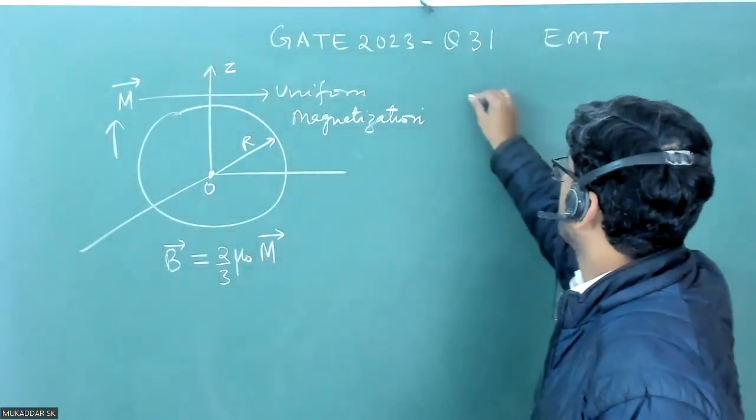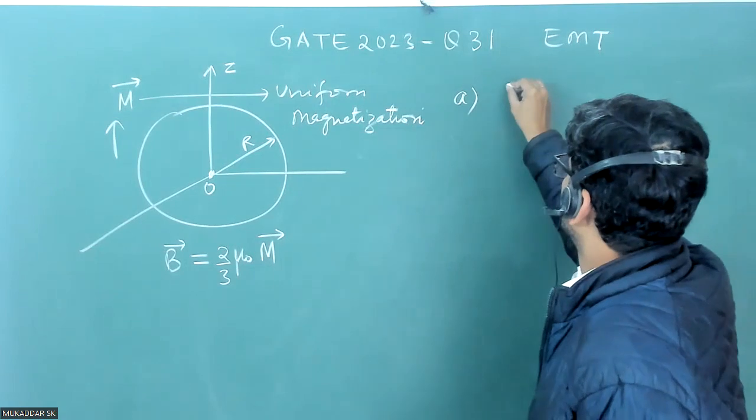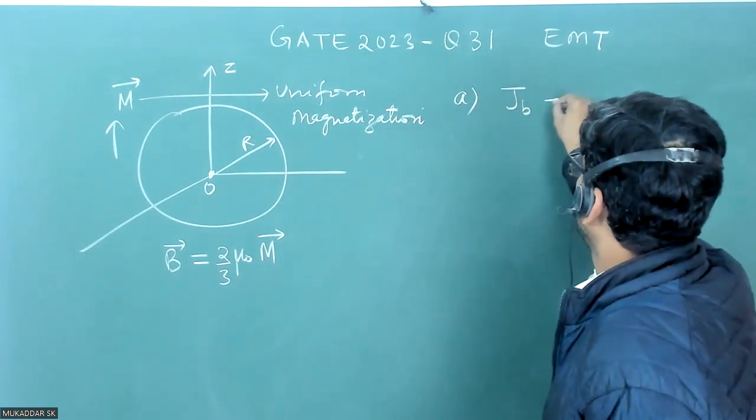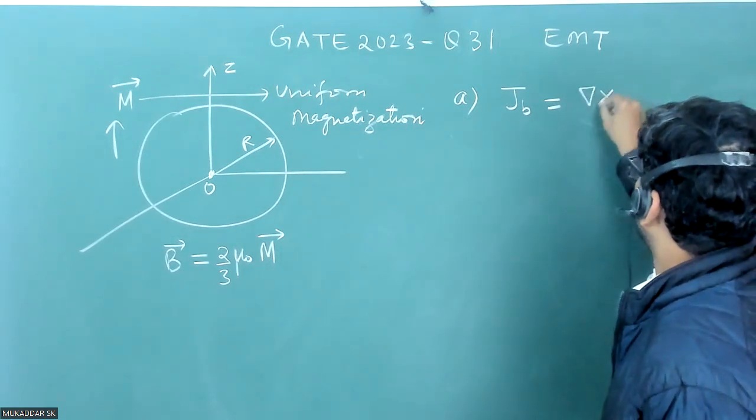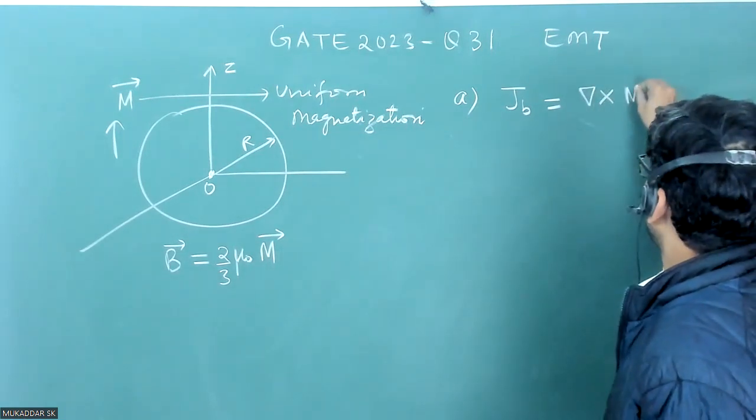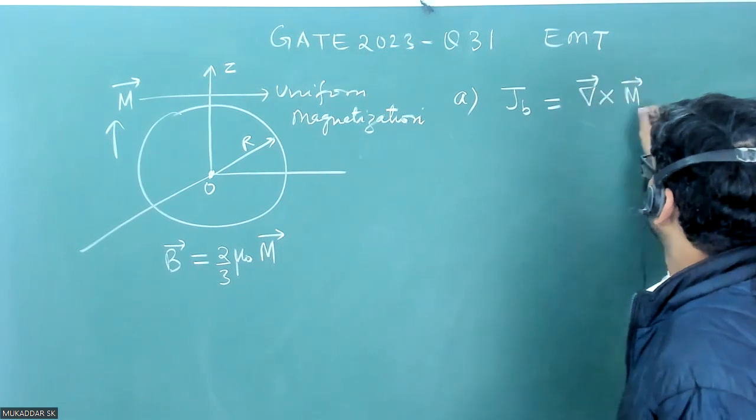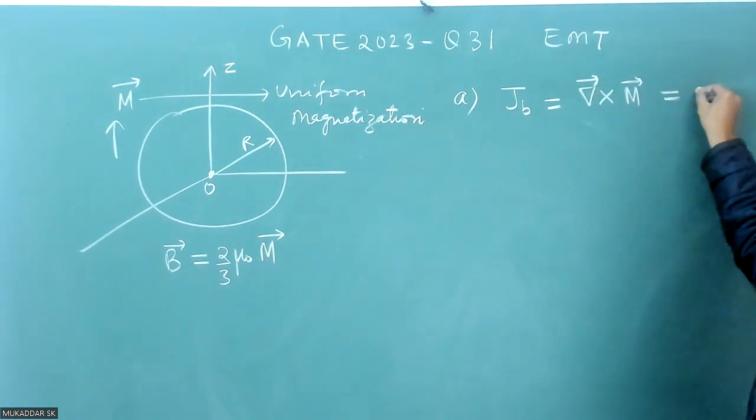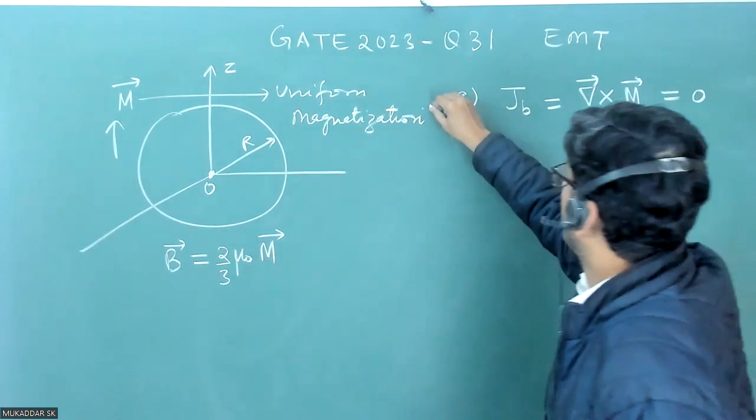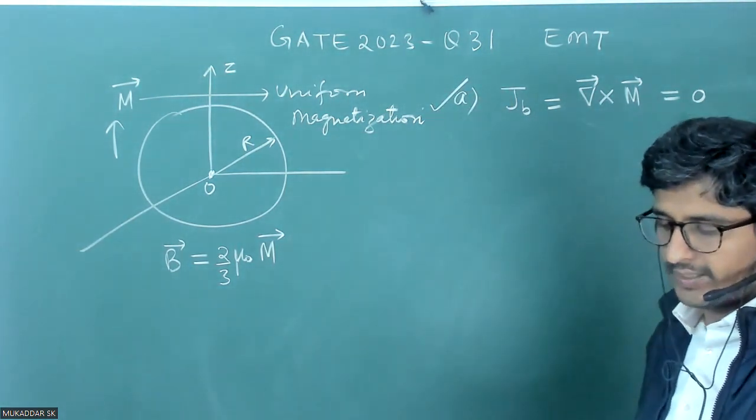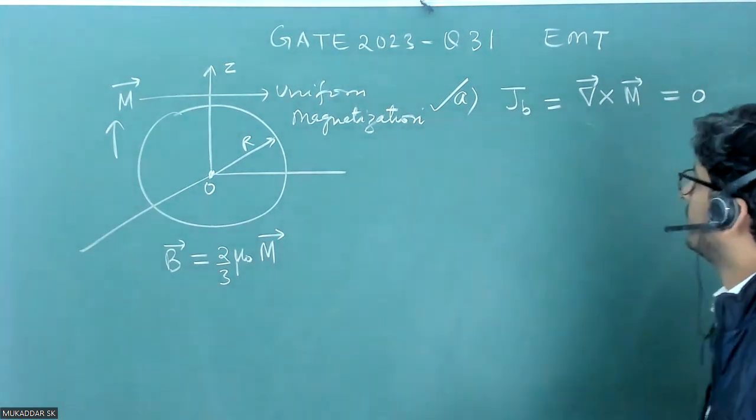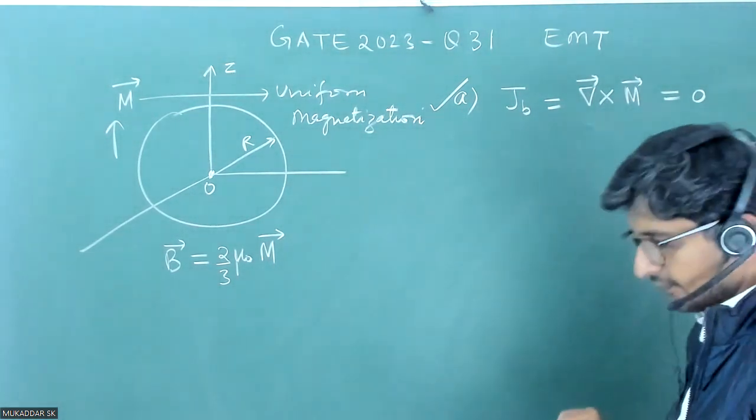First option is about the bound current, JB. We know that JB is equal to del cross capital M. And since the magnetization is uniform, this will be equal to zero. So option A is correct because they have said that the bound volume current density is zero.